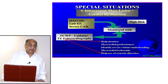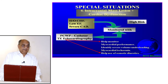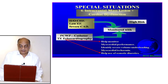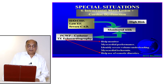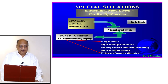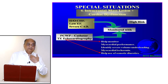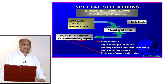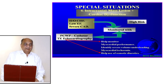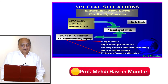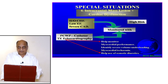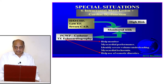Special situation: intracranial mass lesion plus cardiac dysfunction. If there is a history of congestive heart failure, low ejection fraction, or severe coronary artery disease, it is a high-risk patient. Monitor properly — it is better to insert a pulmonary artery catheter to measure pulmonary capillary wedge pressure, and if possible use transesophageal echocardiography. TEE provides information on cardiac contractility, helps monitor myocardial performance, identifies volume under-loading and over-loading, and myocardial ischemia.